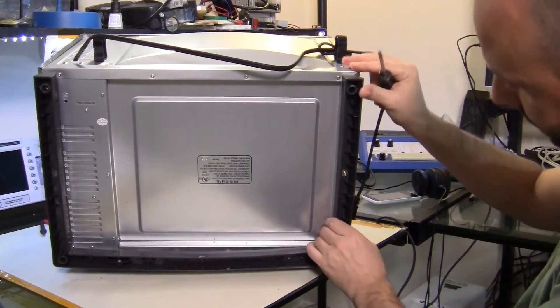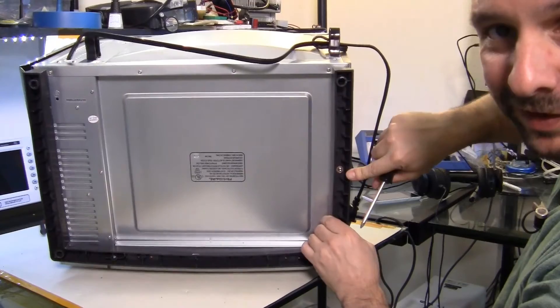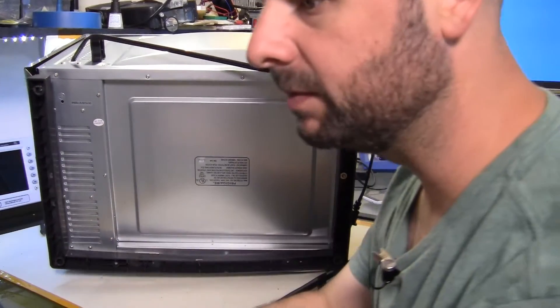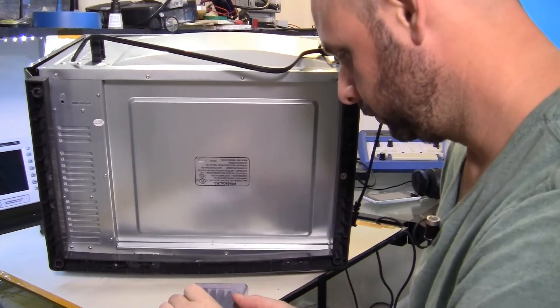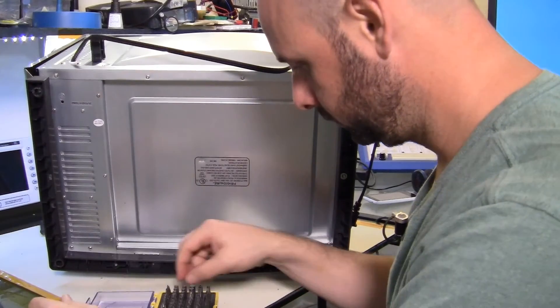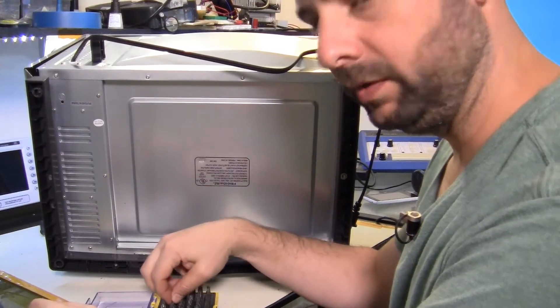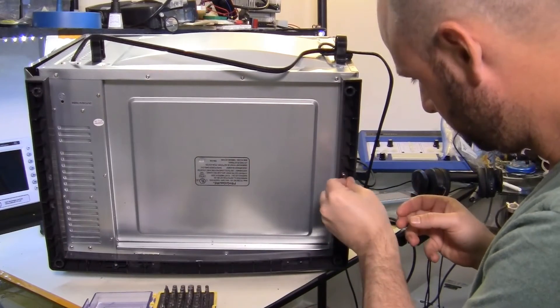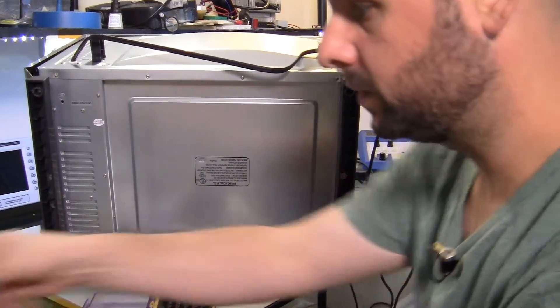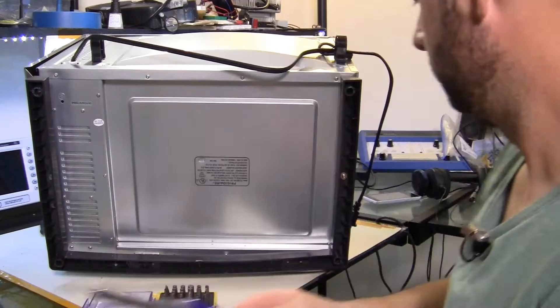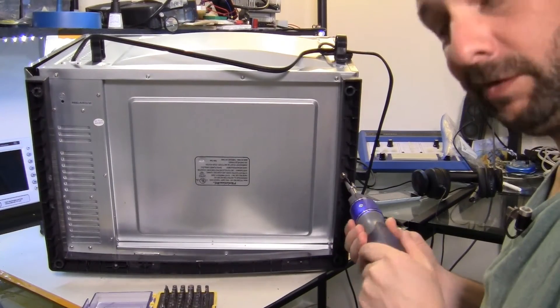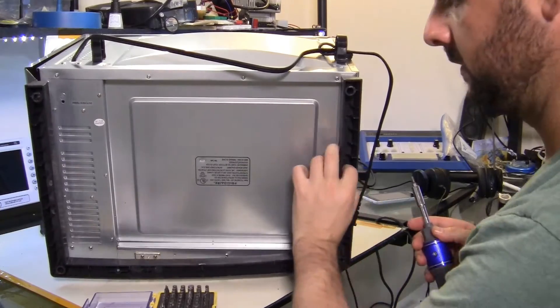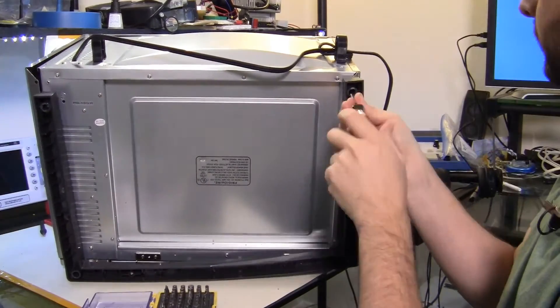That one's not actually screwed into anything. I think that's just a leveling screw anyways. And of course, this one. Don't know if you can see that. It's different. It's a star. Luckily, I've got some of those over here. I don't know why that one had to be different. Some kind of weird security feature. Let's go.